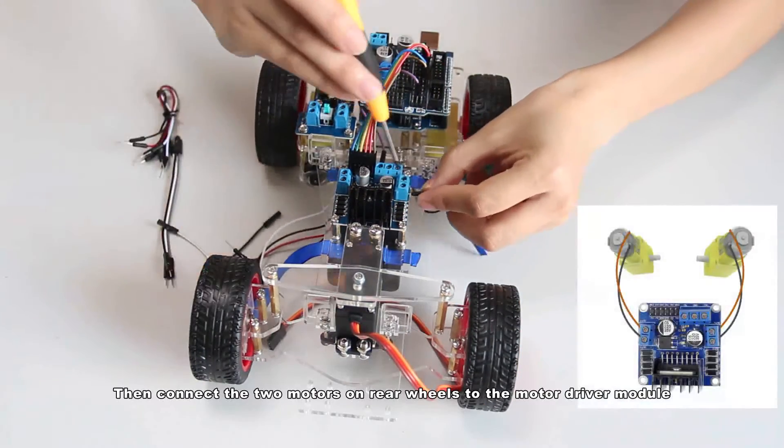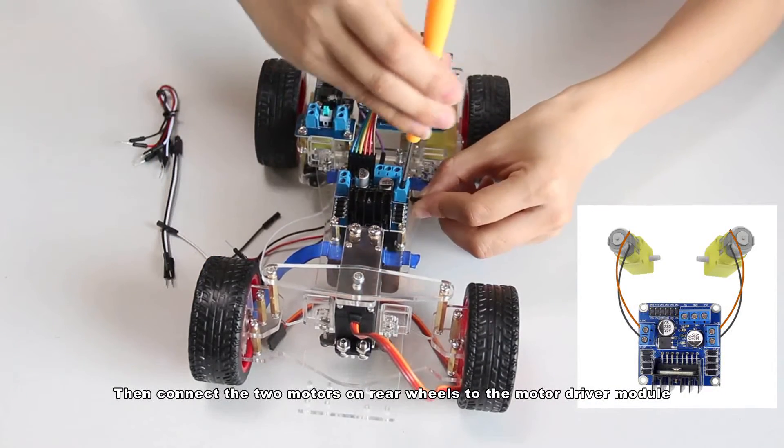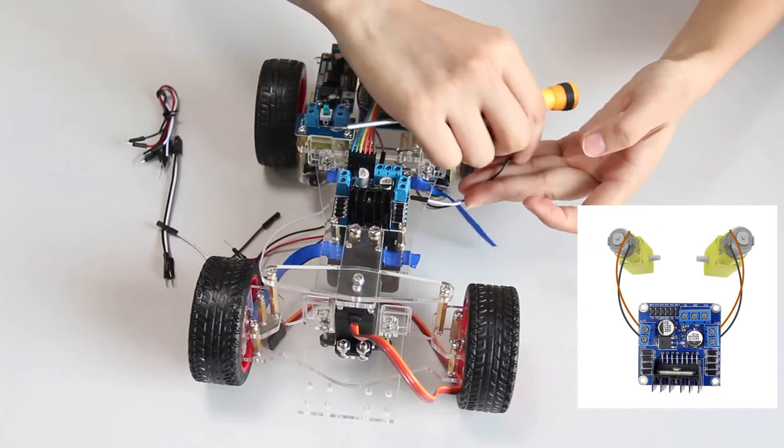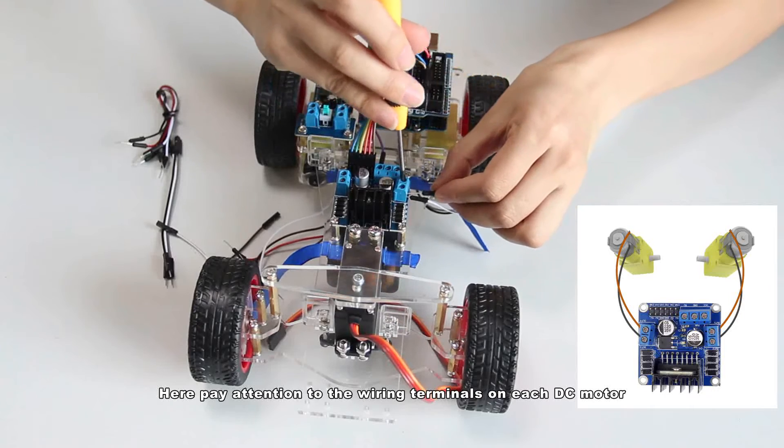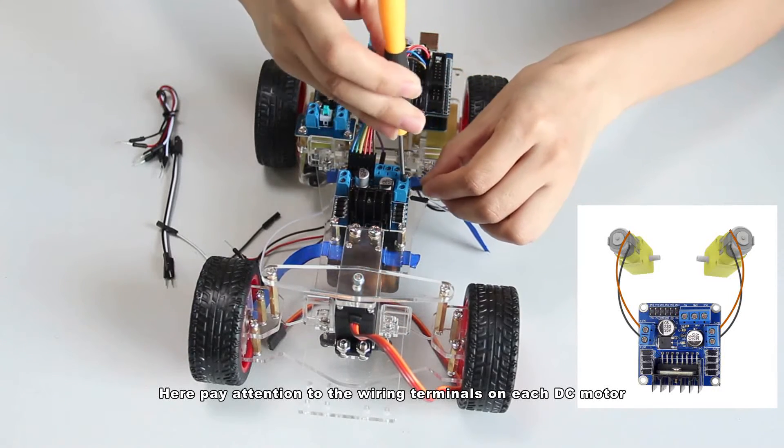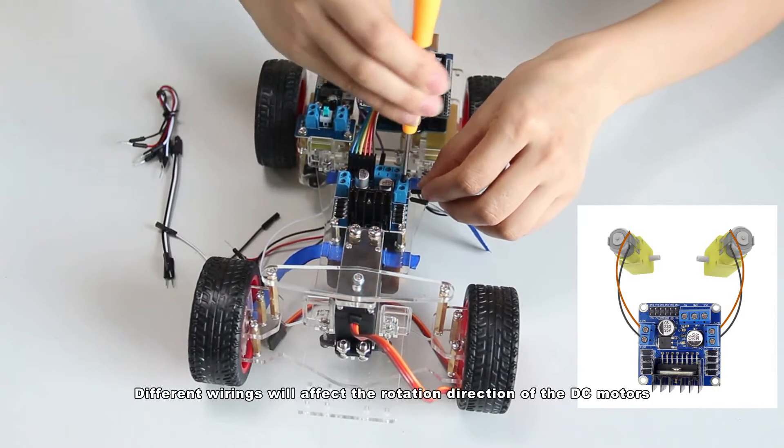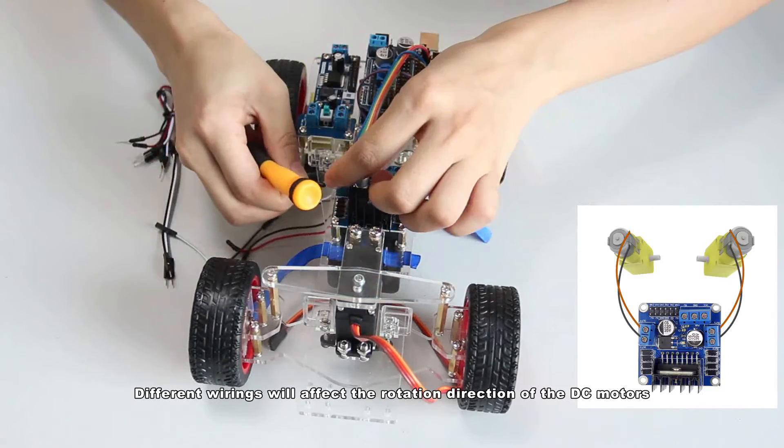Then connect the two motors on the rear wheels to the motor driver module. Here, pay attention to the wiring terminals on each DC motor. Different wiring will affect the rotation direction of the DC motors.